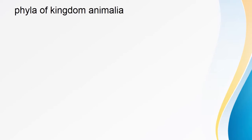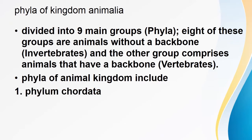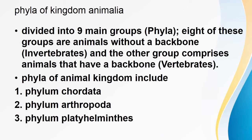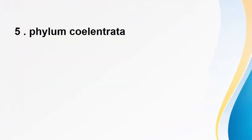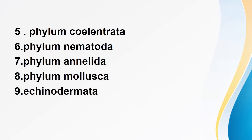The animal kingdom is divided into nine phyla. Eight of them are for invertebrates — animals without a backbone — and just one is for vertebrates — animals with a backbone. The phyla include: Porifera, Arthropoda, Platyhelminthes, Coelenterata, Nematoda, Annelida, Mollusca, and Echinodermata.